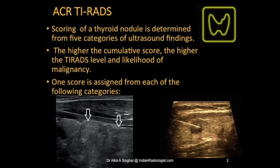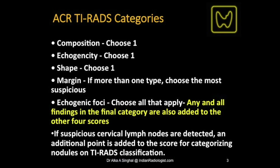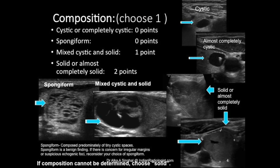As we already know, based on ACR TI-RADS, thyroid scoring is done based on five categories of ultrasound findings: composition, echogenicity, shape, margin, and echogenic foci, along with the absence or presence of cervical lymph node metastasis.